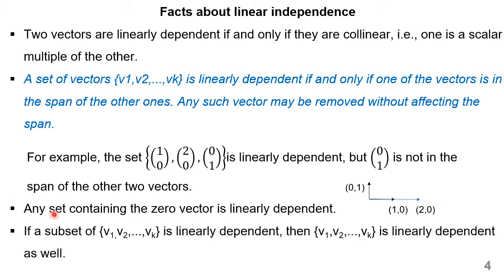The third fact says: if a set contains a zero vector, then it is going to be a linearly dependent set, because instead of (2,0) if I have (0,0), I can get it by multiplying with the scalar 0. So any set which contains a zero vector is linearly dependent. The fourth fact says: if a subset is linearly dependent, then the entire set should also be called linearly dependent.